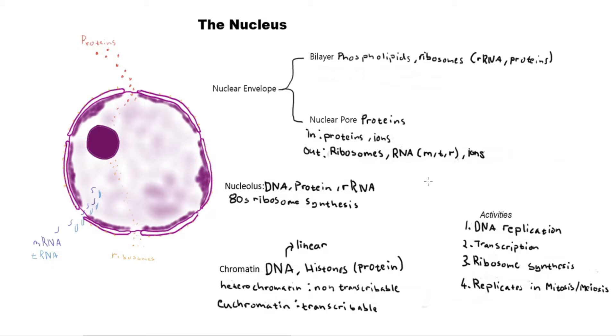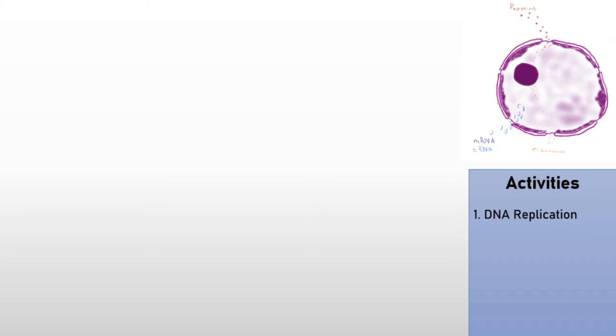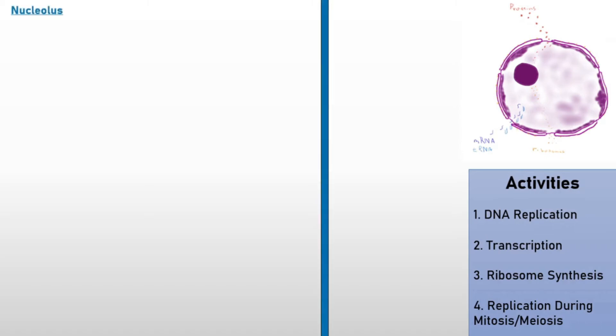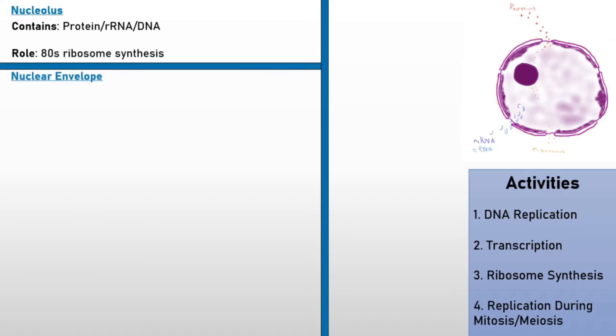That pretty much covers everything you need to know about the nucleus for the IMAT. Let's summarize, starting with activities: the nucleus contains DNA, so DNA replication occurs there; where there's DNA there's also transcription; and the nucleolus makes ribosomes, so ribosome synthesis is a role of the nucleus. As a side note, the entire nucleus replicates during mitosis or meiosis. For the nucleolus specifically: it's made of protein, rRNA, and DNA, and its role is to make the 80S ribosome.